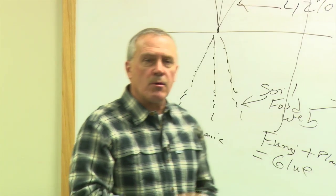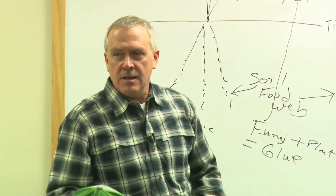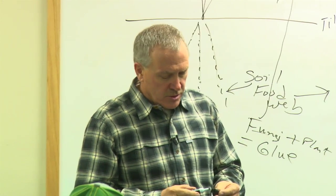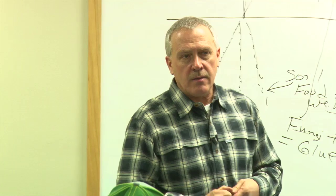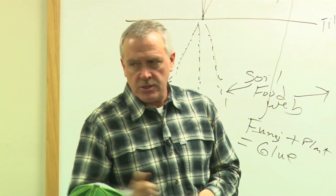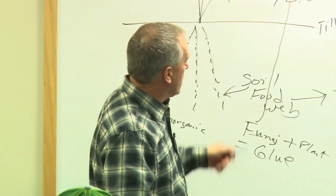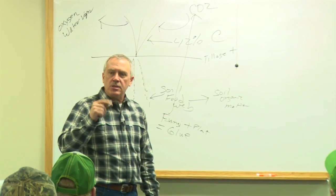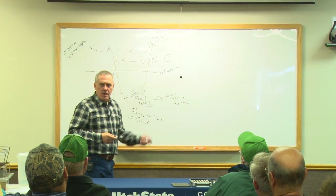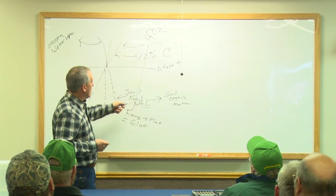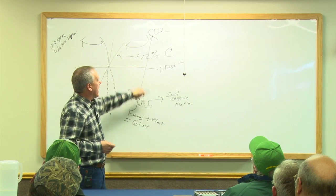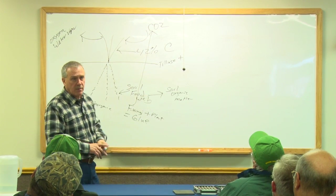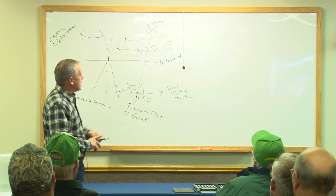I grew up in a summer fallow environment — that's when you take maybe a third of your acres and spend the summer mechanically tilling them. In the part of Dakota I came from, about a third of those acres every year. Initially when we did that, we had some nice yield bumps. What we were doing was mineralizing — the biology could get at more food, and more CO2 was being released. We didn't know that at the time, but it's been substantiated many times over.